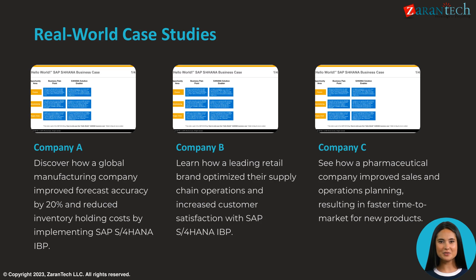Case studies: Company A improved forecast accuracy by 20% and reduced inventory costs. Company B optimized its supply chain and increased customer satisfaction. Company C improved sales and operations planning, resulting in faster time to market.